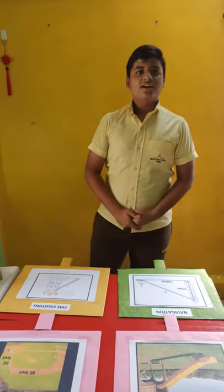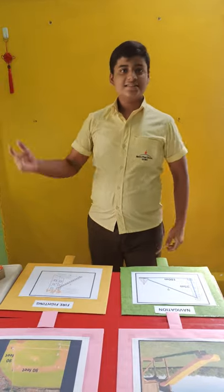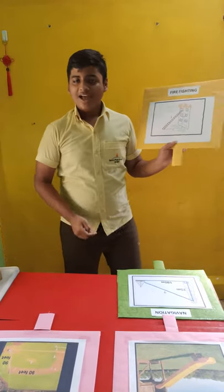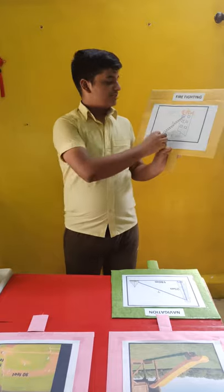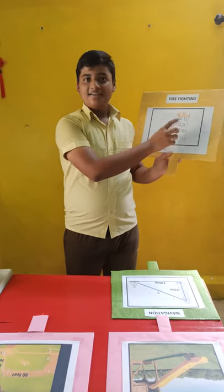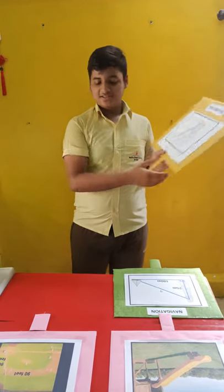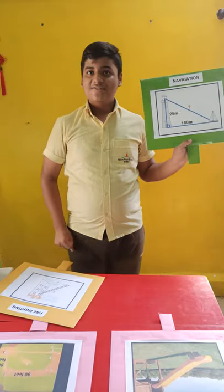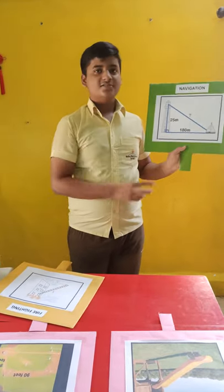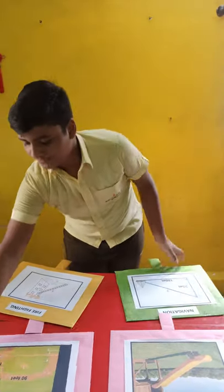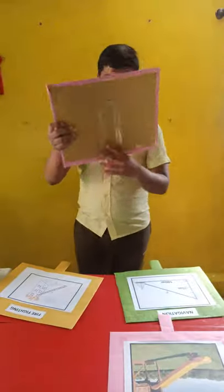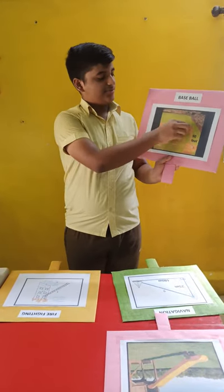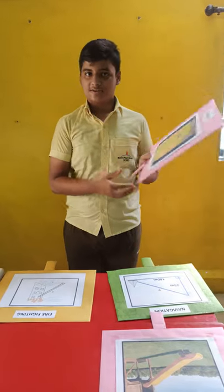Hey friends, we come across Pythagoras theorem in many instances of our life. Firefighters use Pythagoras theorem to safely place the ladder using the height and the distance. It is used in two-dimensional navigation to find out the shortest distance between two intervals. It is also used in the game of baseball, as the distance between two bases is 90 feet.